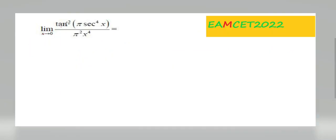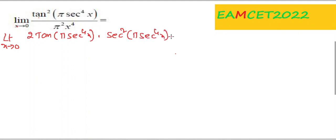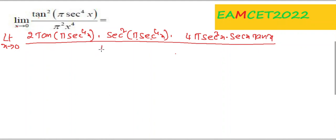Next: limit x tends to 0 of tan²(π·sec⁴x) / (π²·x⁴). As x → 0 this is 0/0 form. Taking the derivative: numerator derivative is 2 tan(π·sec⁴x) · sec²(π·sec⁴x) · 4π·sec³x · sec x · tan x; denominator derivative is 4π²x³.